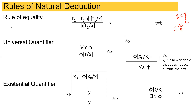For the existential quantifier: if we are given there exists x of φ, meaning there is some value of x for which φ holds, then taking that value x₀, if we can conclude a formula χ which is independent of x, then we can say χ holds. This is the elimination rule of the existential quantifier. For the introduction rule: if there is a term independent of x for which φ holds, then we can say there exists x such that φ is true.